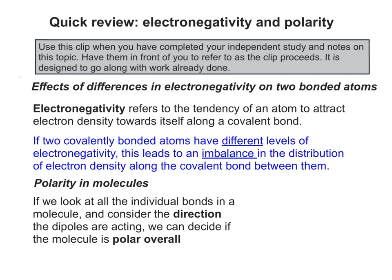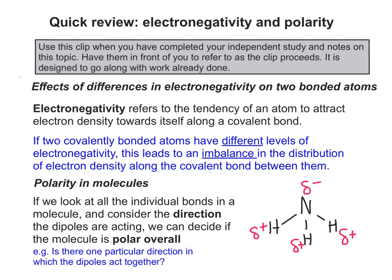If we look at all the individual bonds in a molecule and consider the direction the dipoles are acting, we can decide if the molecule is polar overall. Take ammonia: the molecule is clearly polar because the nitrogen end is more negative than the hydrogen ends. The overall direction in which the combined dipoles act is called the dipole moment, shown with an arrow that has a little line halfway through it.